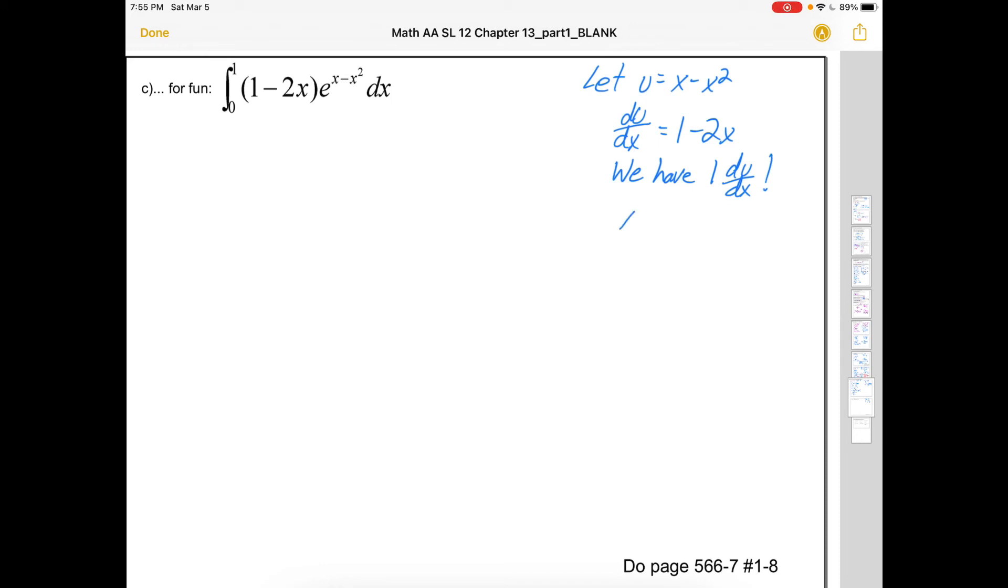I also need to change the boundaries. So x is 1 and x is 0. When x is 1, u is going to be 1 minus 1 squared or 0. When x is 0, u is going to be 0 minus 0 squared or 0. Alright. Let's make the substitution.